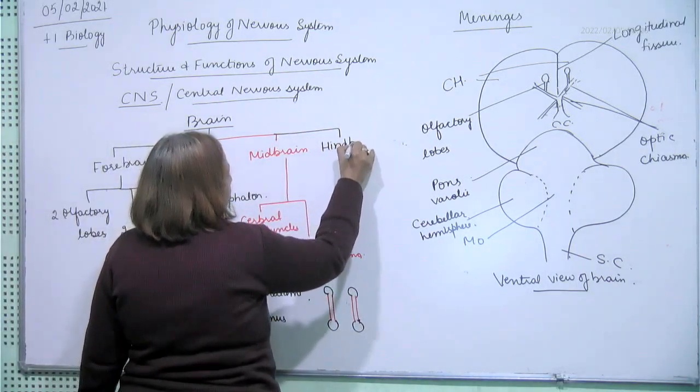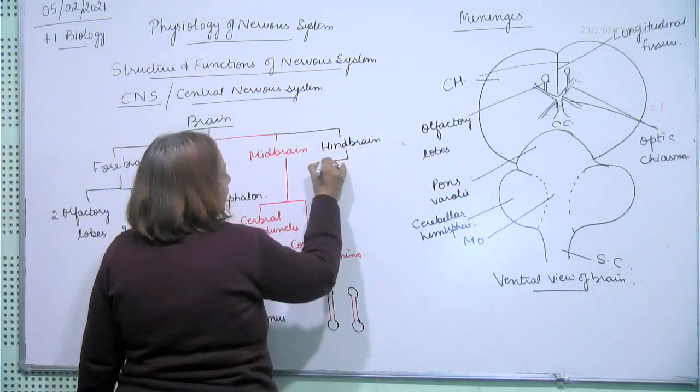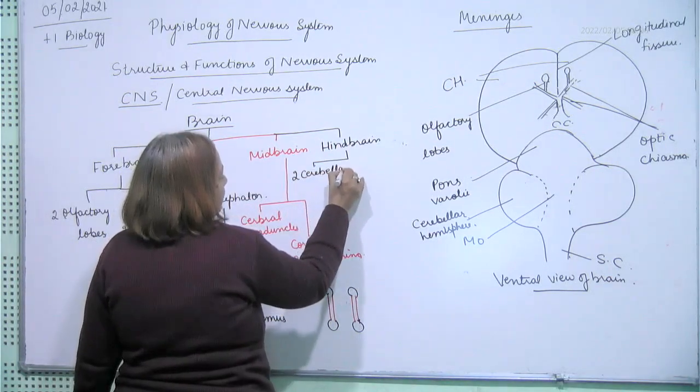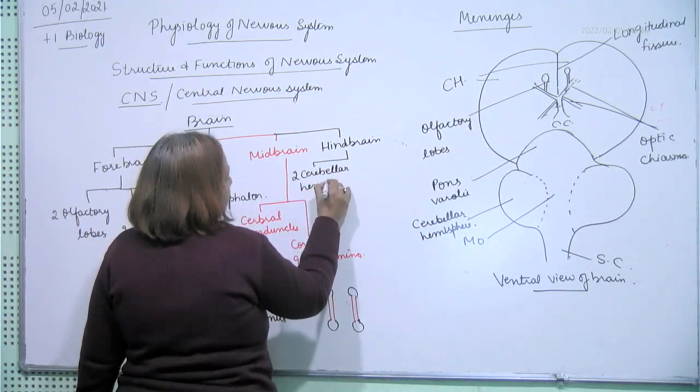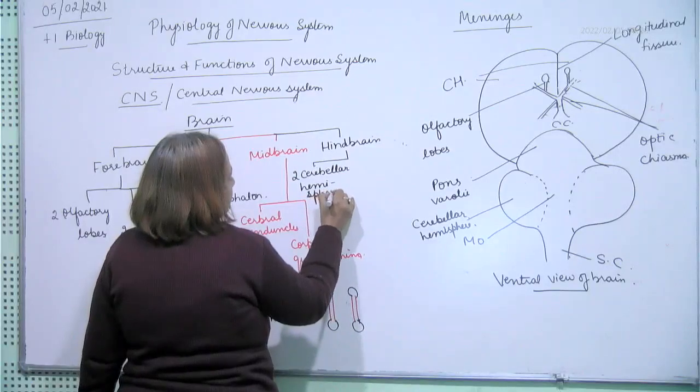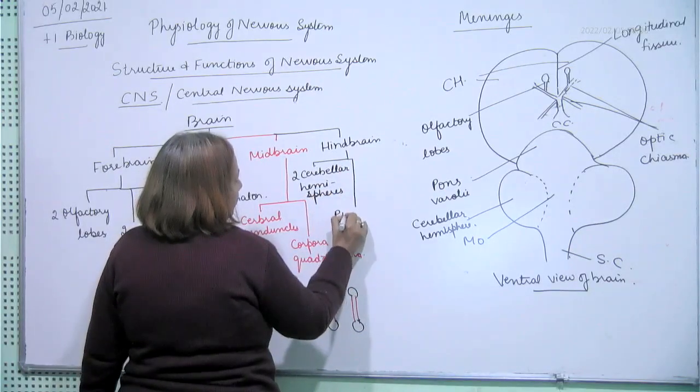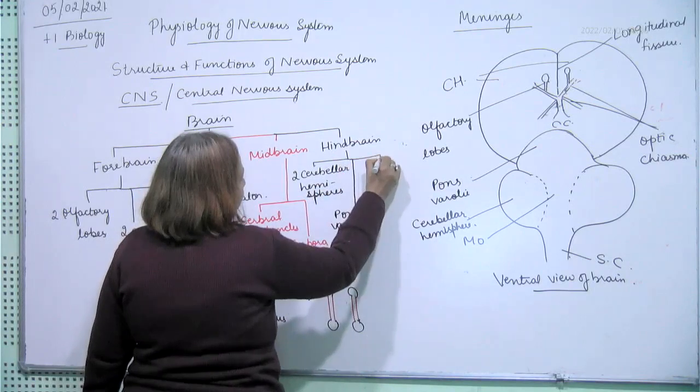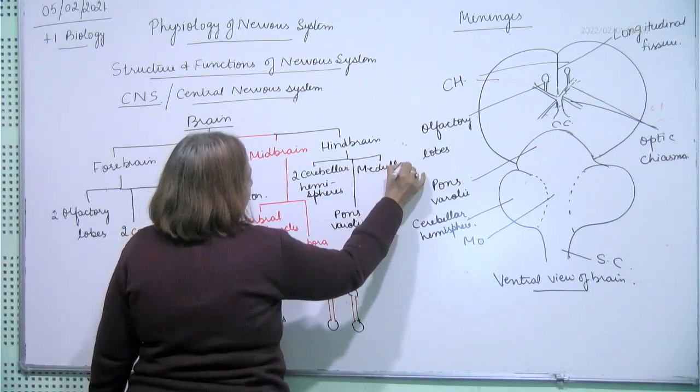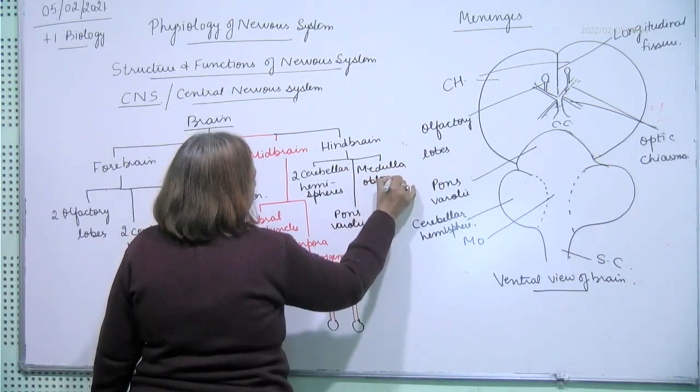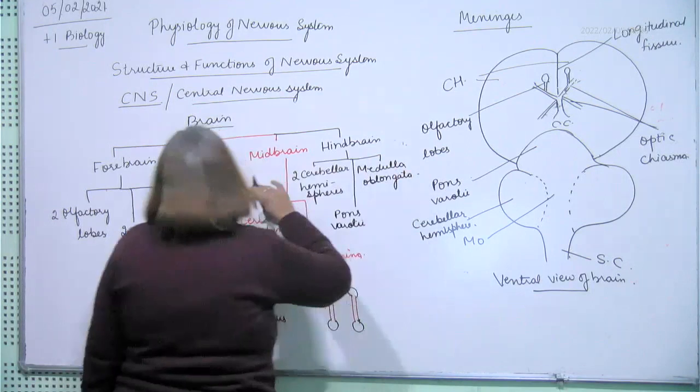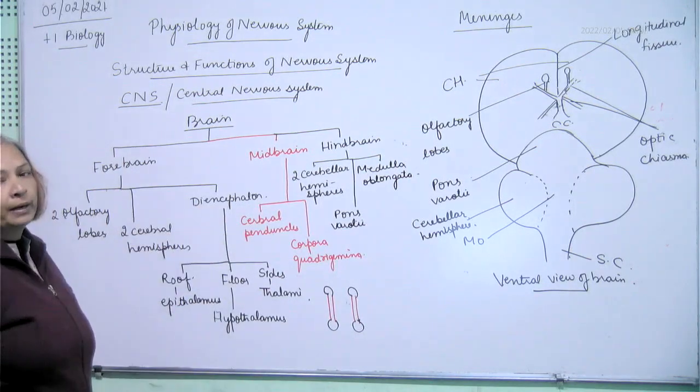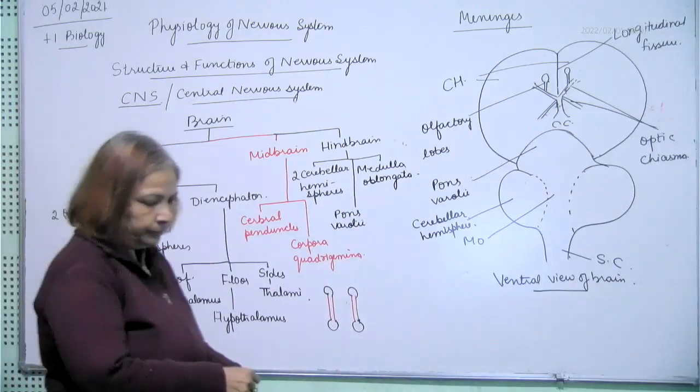Hindbrain. Hindbrain, what is present? That is two cerebellar hemispheres, pons varolii, pons varolii, and third is medulla oblongata. These are the main parts. There are many more parts but these are the main parts of the brain.